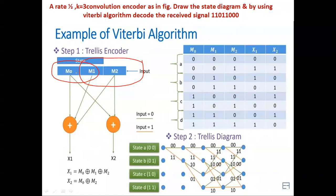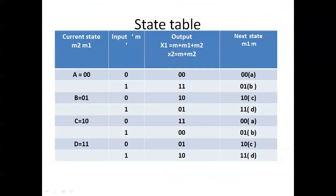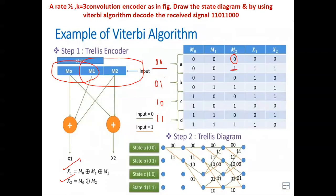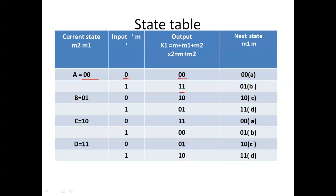Since we have two shift registers, we have four possible state combinations: state A is 00, state B is 01, state C is 10, and state D is 11. For each state we consider two inputs — binary 0 and binary 1 — and calculate the output x1 and x2 from the equations to fill the state table. For present state 00 with input 0, we compute x1 and x2 and find the next state. From this, state A with input 0 goes to A, and with input 1 goes to B.